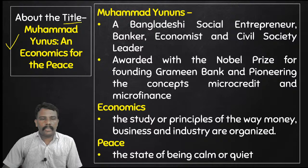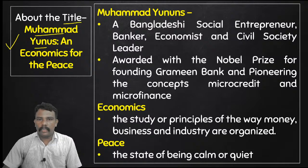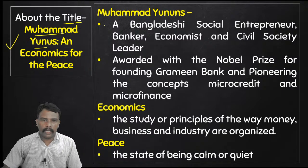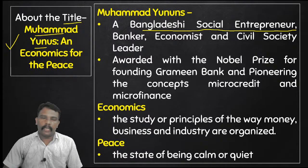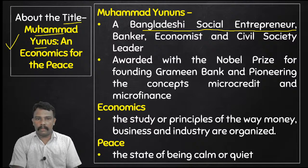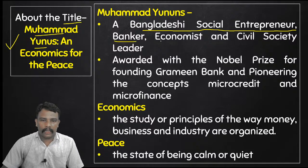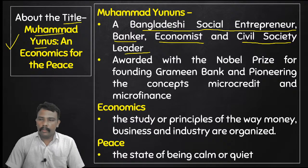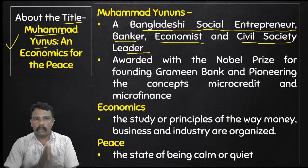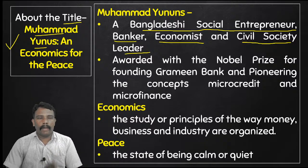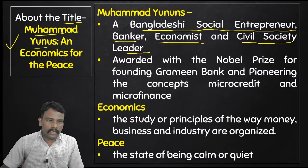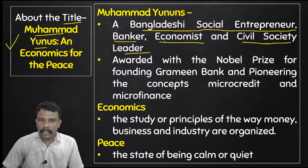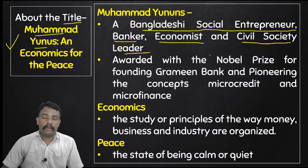First of all, I am going to discuss about the title. You already told who is Muhammad Yunus — a Bangladeshi social entrepreneur. First of all, we must know about him. A Bangladeshi social entrepreneur — what is the meaning of entrepreneur? Businessman, banker, owner of the bank, economist who studies economics and civil society leader. All these are very important points. I am telling you about the title. Why is this title given? Because Muhammad Yunus is a Bangladeshi social entrepreneur, banker, economist and civil society leader.